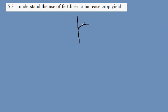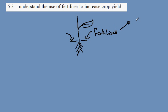IGCSE Biology syllabus statement 5.3, and here we'll be looking at the use of fertilizers to increase crop yield. Here's our plant and we want to increase the growth of this plant. This is achieved in farming by the application of fertilizers to the soil, and these normally take the form of nitrates or phosphates, and frequently a combination of both.